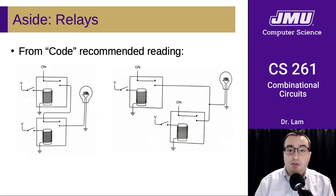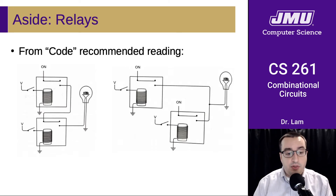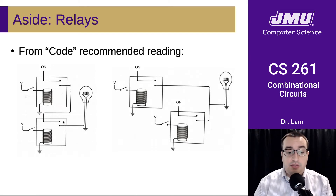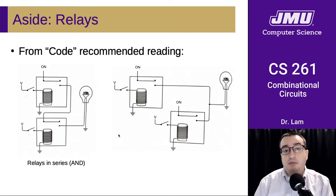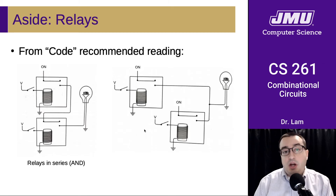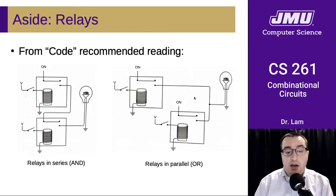So here we have two relays connected together — the output of one relay feeds the input of another relay, and the output of that second relay connects to the light bulb. This is called connecting relays in series, and hopefully you can see how this implements a boolean AND, because the signal only gets to the light bulb if both switches are on. We could also connect these relays in parallel rather than in series — in that case, both relays have connections to the light bulb, so if either one is on, the light bulb is going to be on.